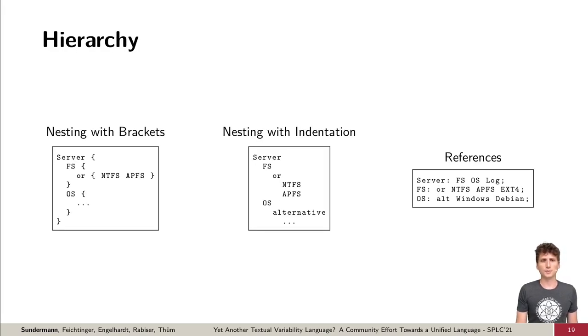We also found three different ways to specify hierarchy, using nesting with either indentation or brackets, or use references to the children's feature names. The results were similar for nesting with indentation and references. So we decided to propose two versions of UVL, one using nesting, one using references.